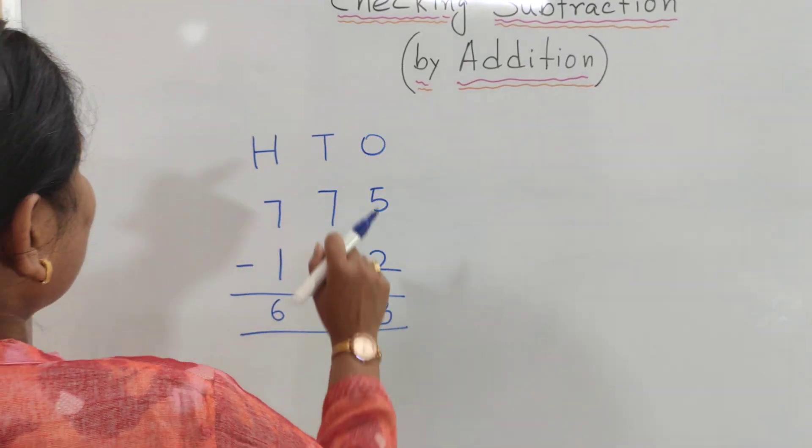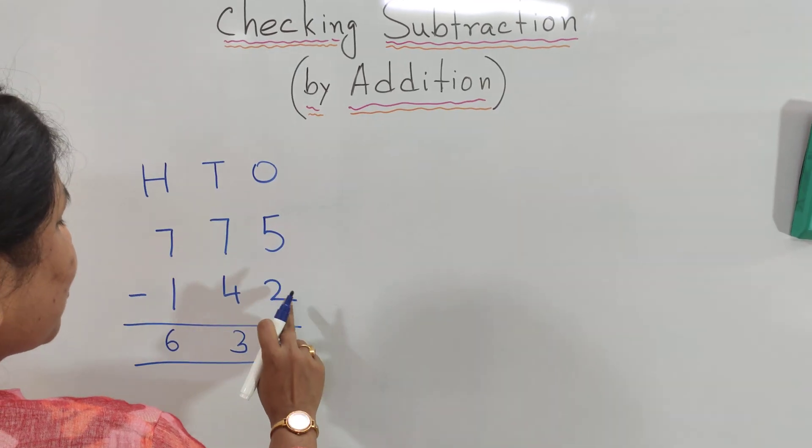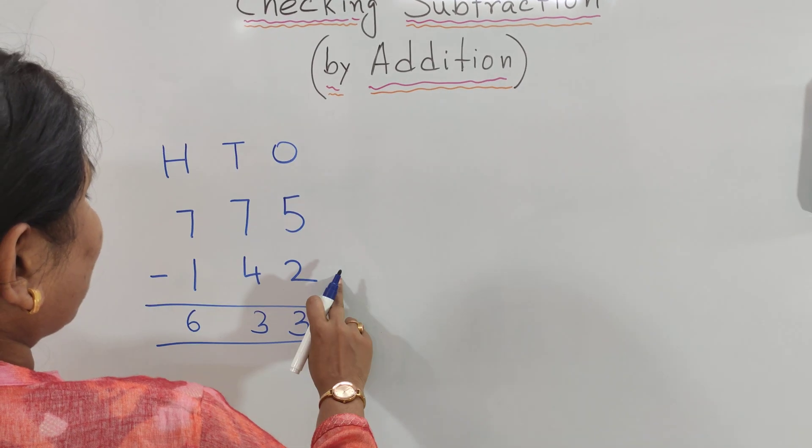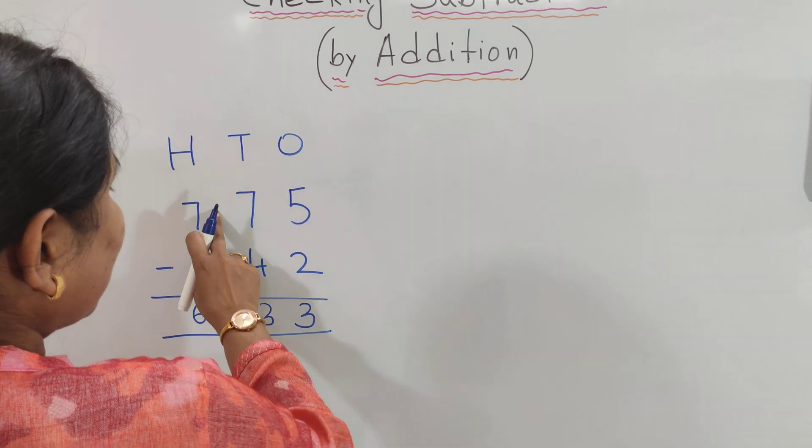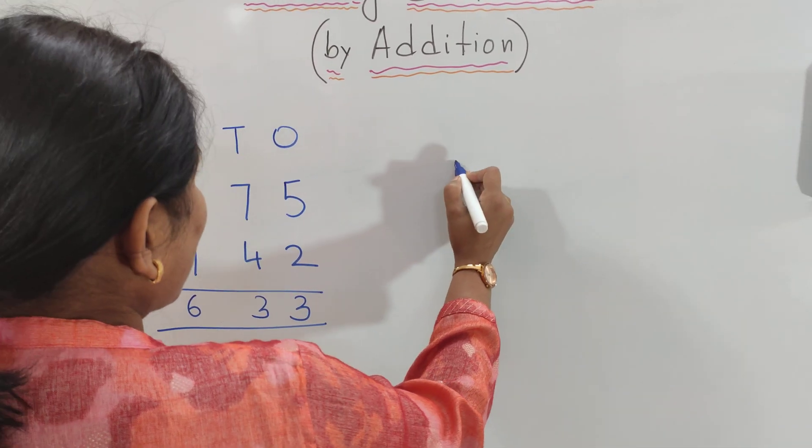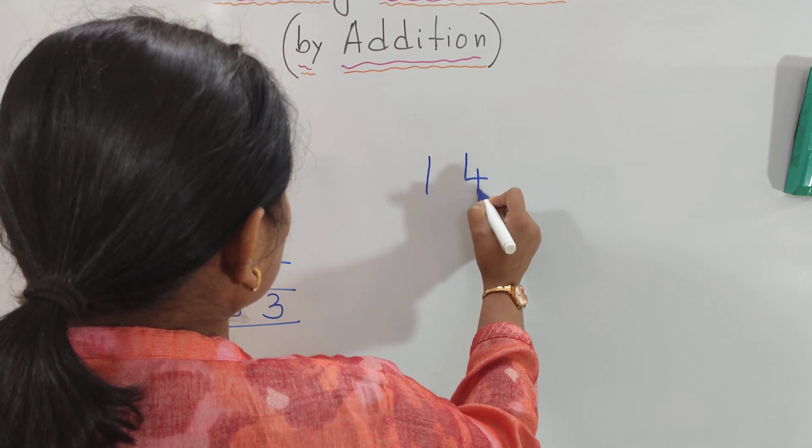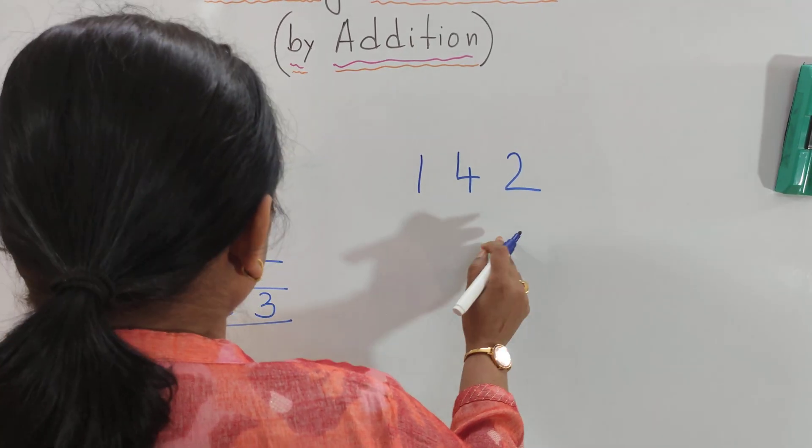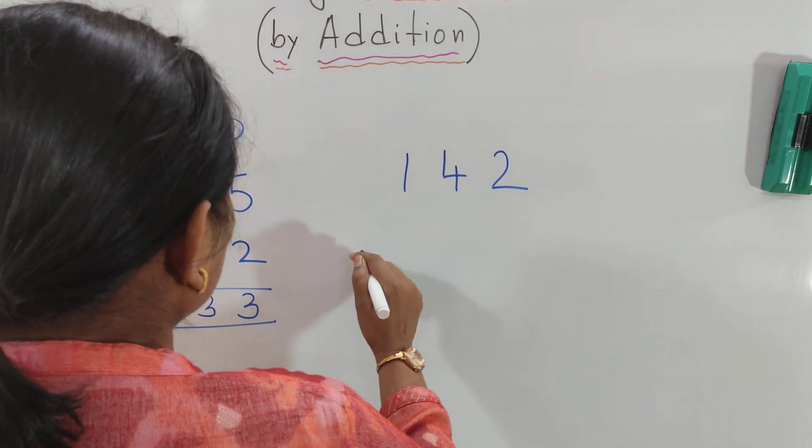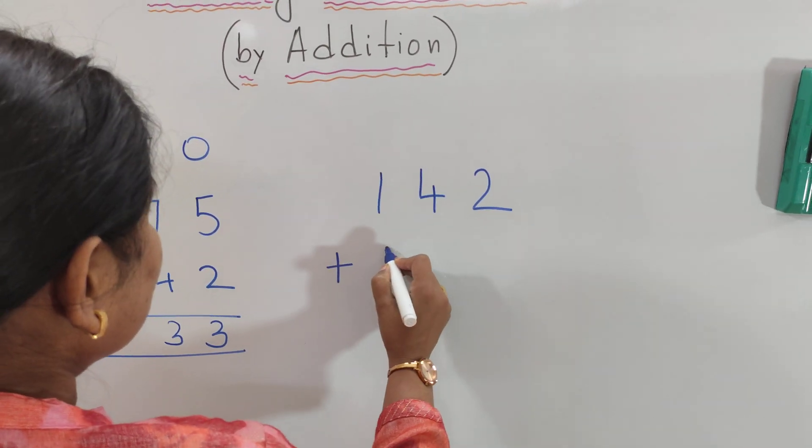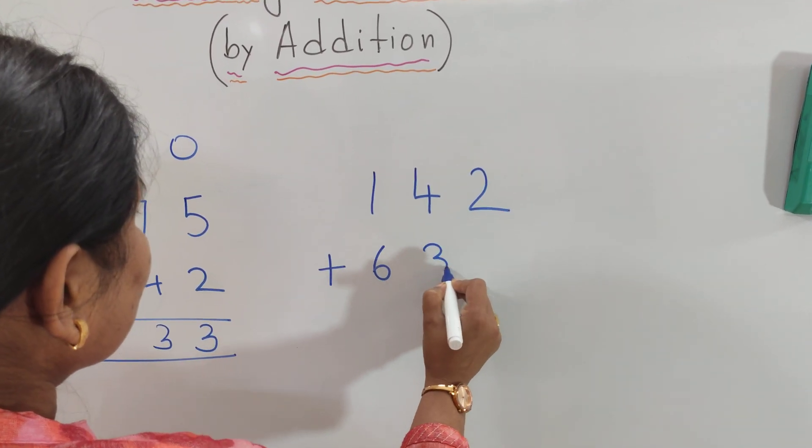Now how will we check? Let's add the smaller number among these two numbers. So the smaller number among these two numbers is 142, and 142 is also known as subtrahend. With 142 we will add the difference that is 633.